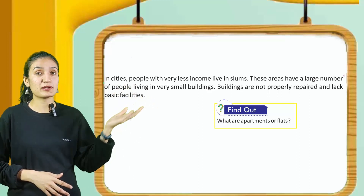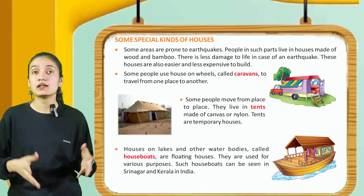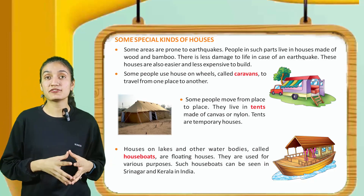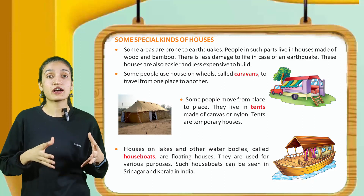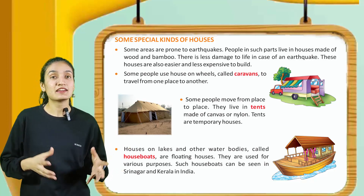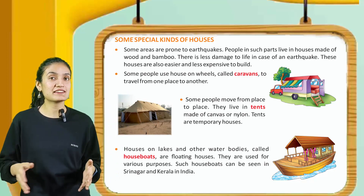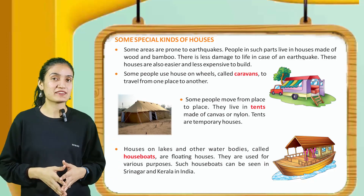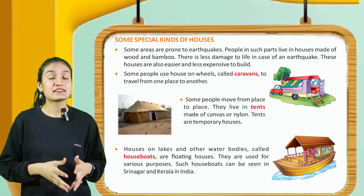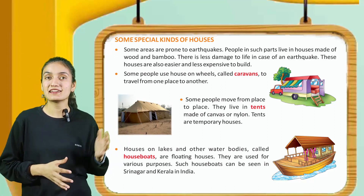Let's find out what are apartments or flats. Some special kinds of houses: some areas are prone to earthquakes. People in such parts live in houses made of wood and bamboo. There is less damage to life in case of an earthquake. These houses are also easier and less expensive to build. Some people use houses on wheels called caravans to travel from one place to another. Some people move from place to place and live in tents made of canvas or nylon. Tents are temporary houses. Houses on lakes and other water bodies called houseboats are floating houses. They are used for various purposes. Such houseboats can be seen in Srinagar and Kerala in India.